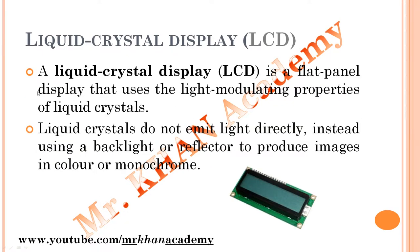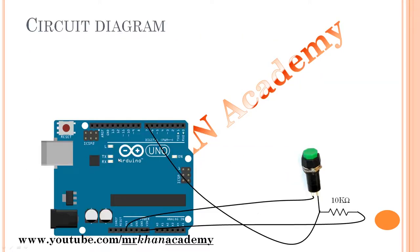What is an LCD? The liquid crystal display is a flat panel display that uses the light-modulating properties of liquid crystals. Liquid crystals do not emit light directly; instead they use a backlight or reflector to produce images in color or monochrome. This is the working principle of LCD. Now the circuit diagram — in Part 5 you saw how we controlled an RGB LED with a push button, and the same kind of connection applies here for the push button.